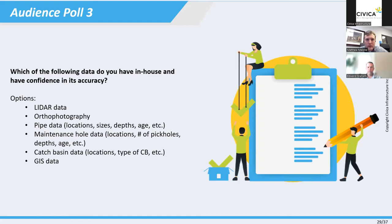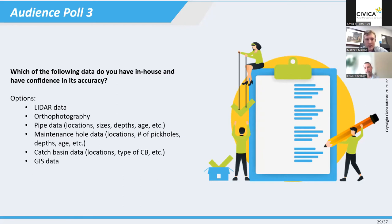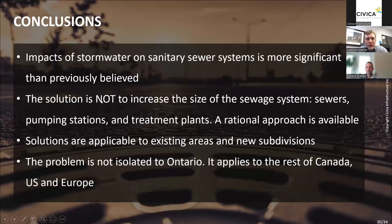A poll on what data municipalities have in-house shows: pipe data in GIS is pretty good, but lidar coverage looks a bit low. Having good lidar-based surface topography is essential for doing this type of dual drainage analysis.